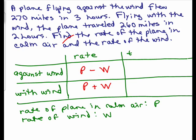Now let's talk about the time and distance going against the wind. Remember rate times time equals distance. Flying against the wind, it flew 270 miles in three hours. So the distance was 270 miles and the time was three hours.